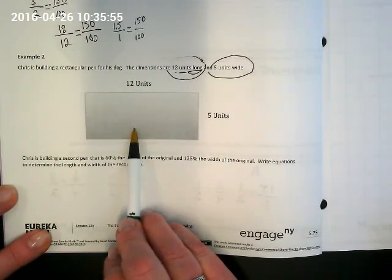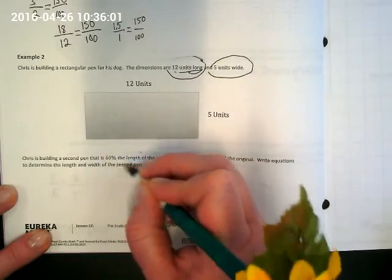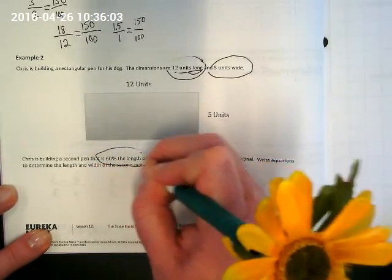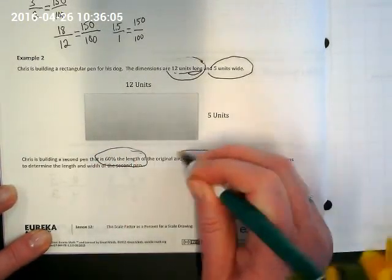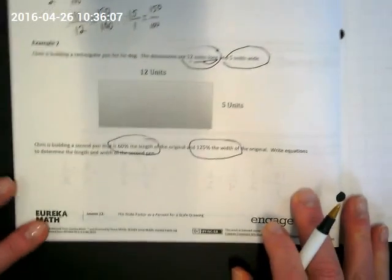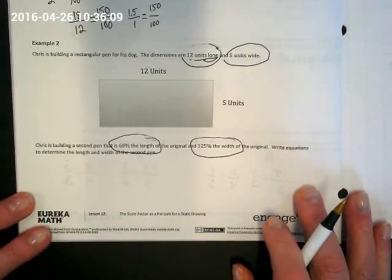We're shrinking one side of it and we're enlarging the other, and it's going to be a completely different rectangle. So we need to do 60% of the length and 125% of the width. What equations can we write down to do that?